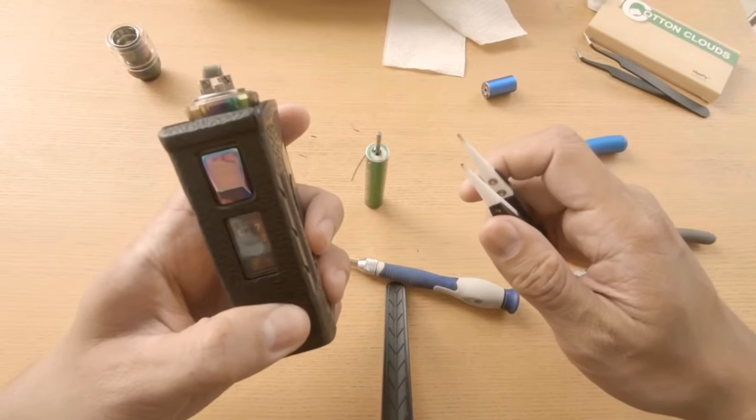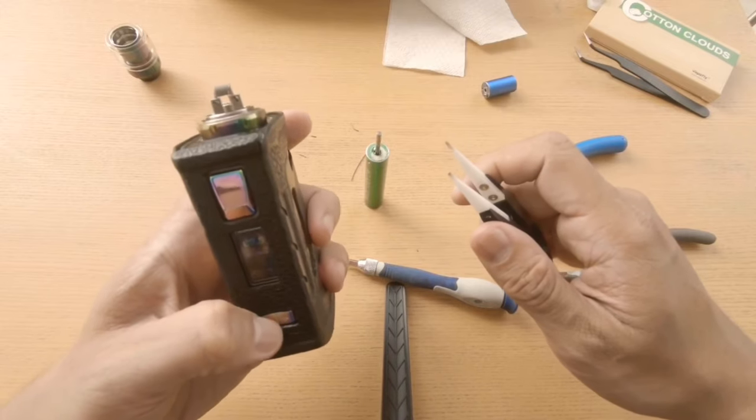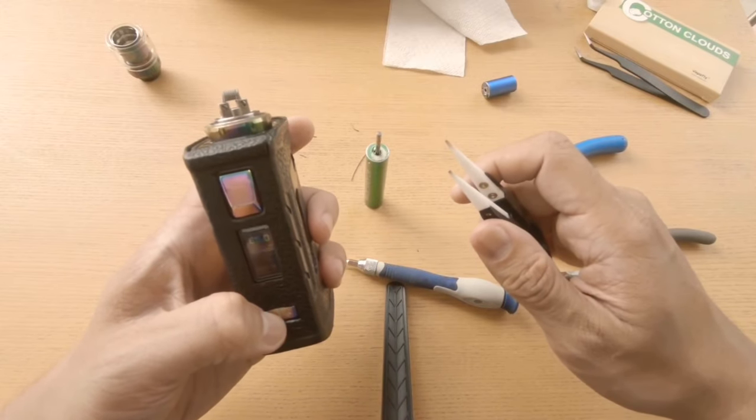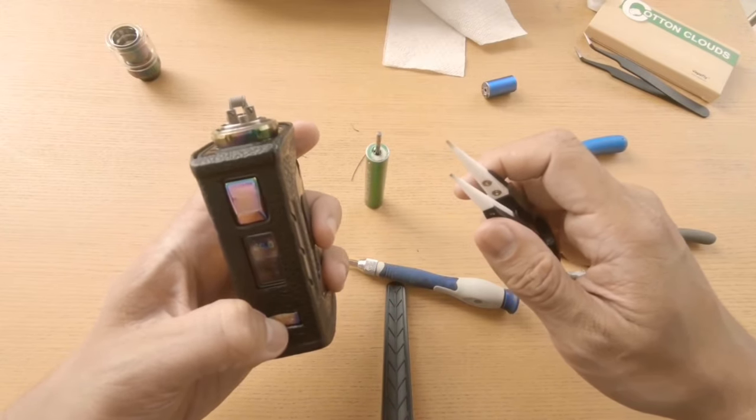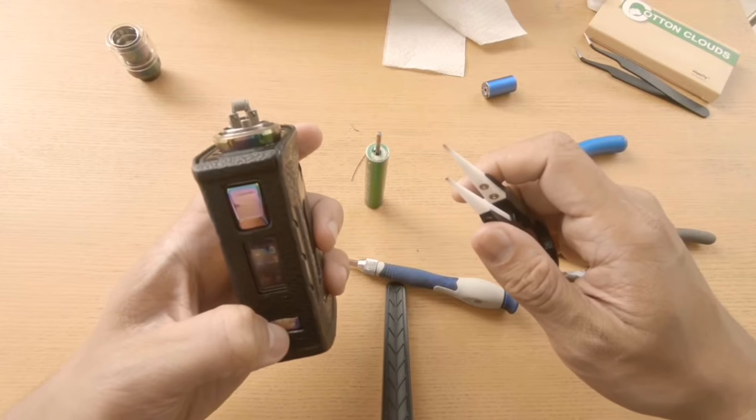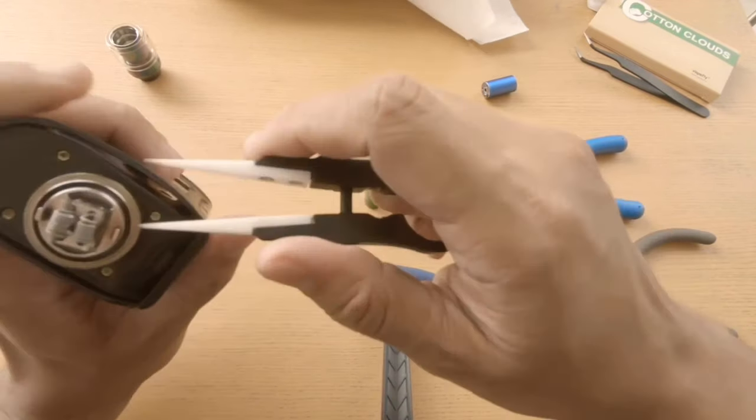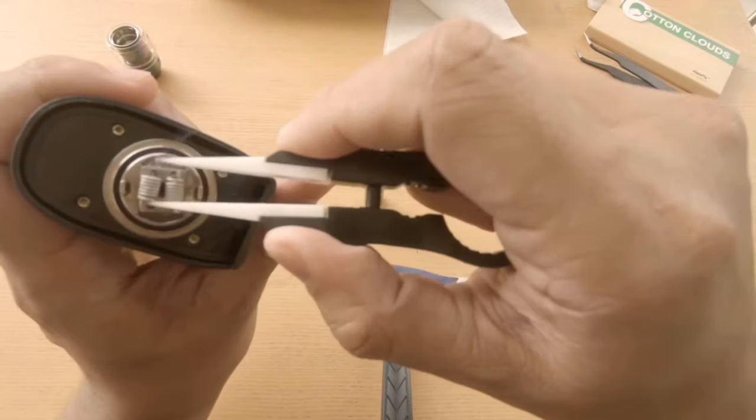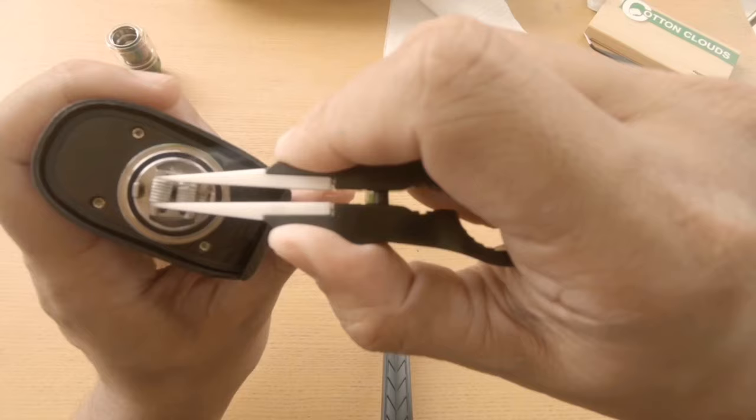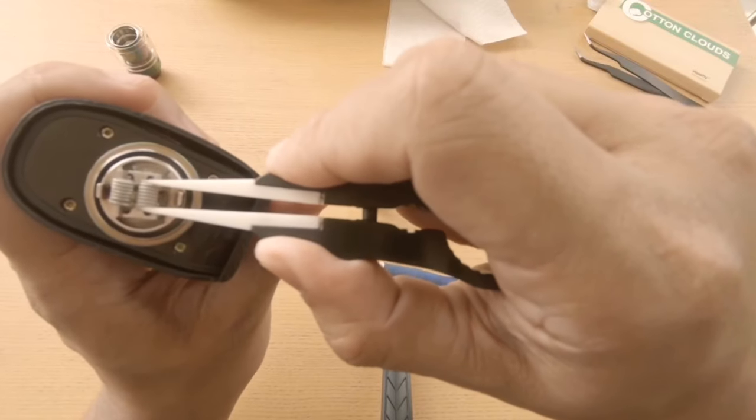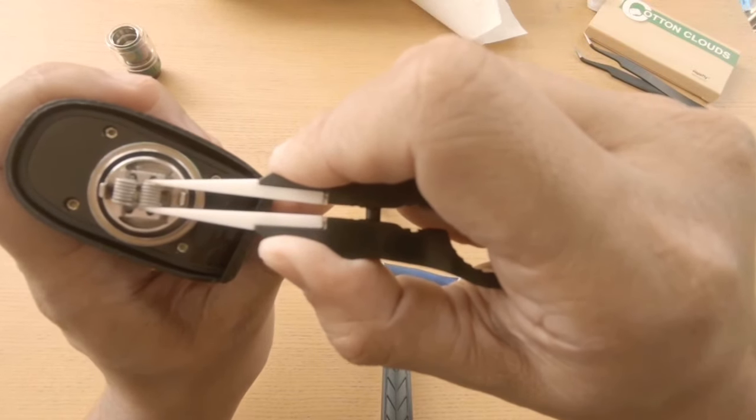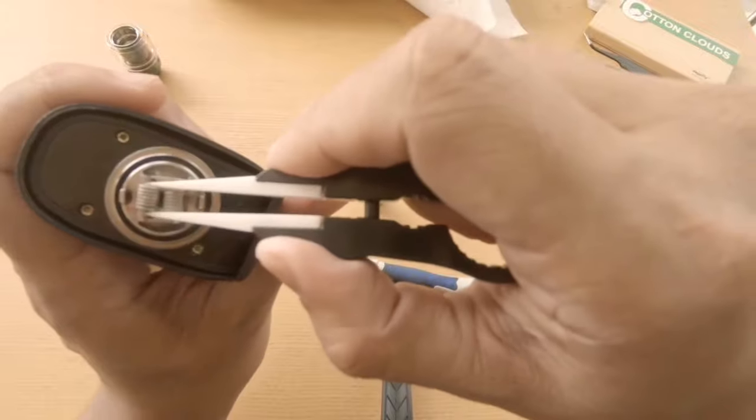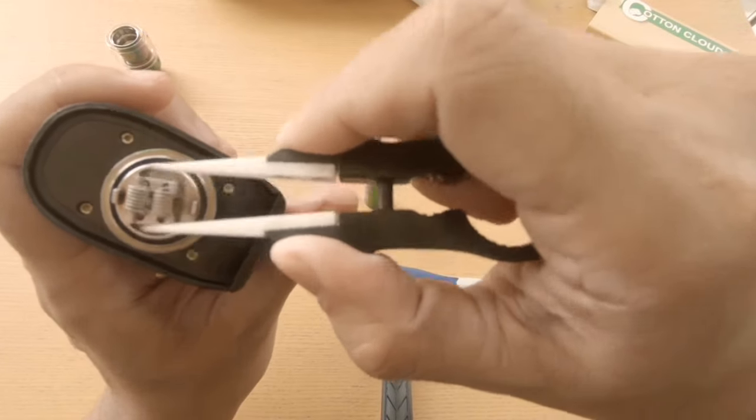Now, first lower the wattage to around 30 to 35 watts. Squeeze the coils together while firing to even out the heat, and the hot spots will easily come out and be brushed away.